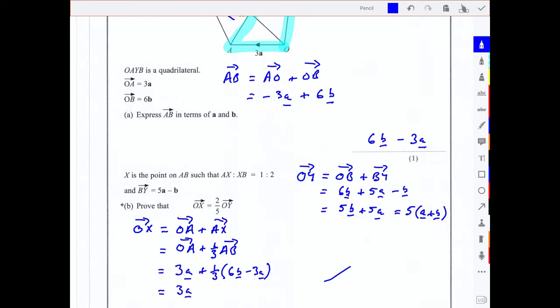Multiply out the brackets and we get 3a, a third of 6b is 2b, and a third times minus 3a is minus 1a, I'll just write minus a. What does that come to? That comes to 3a take away a is 2a plus 2b.